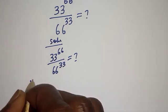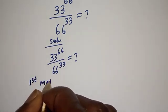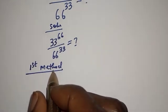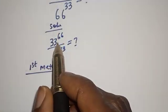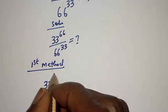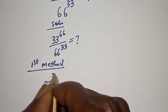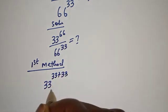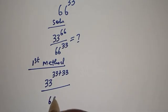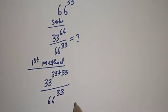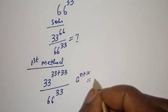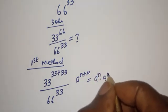Let's call this the first method. With the first method, 33 raised to power 66 can be written as 33 raised to power 33 plus 33, divided by 66 raised to power 33. If you have a raised to power n plus m, this is equal to a raised to power n multiplied by a raised to power m.